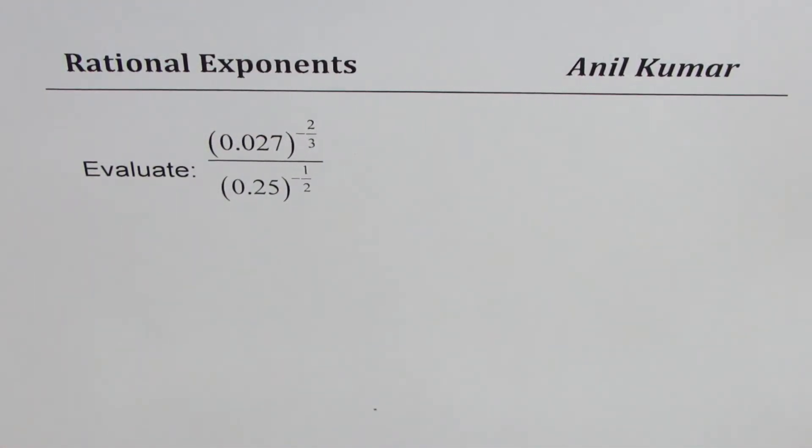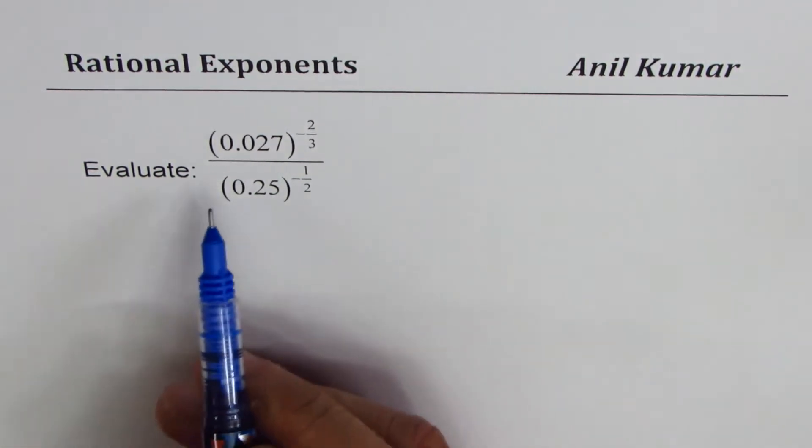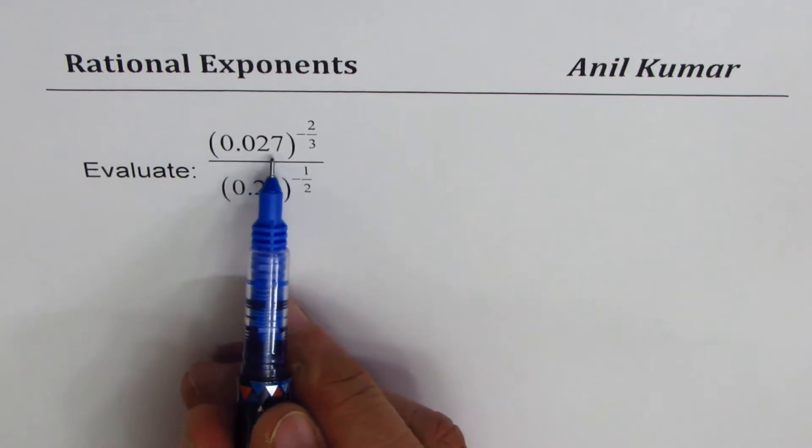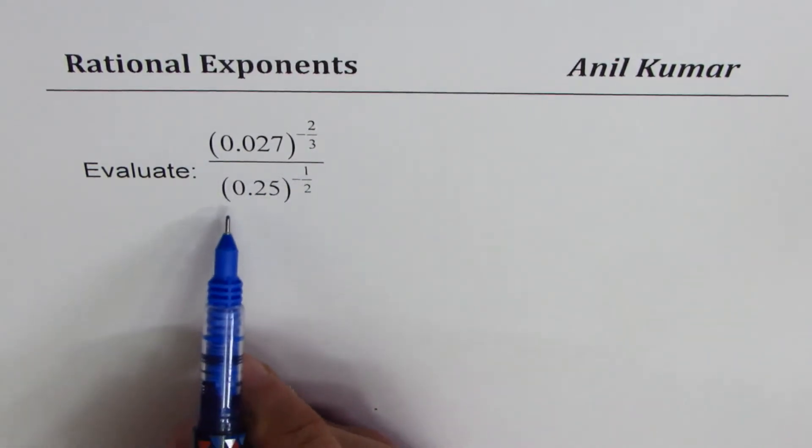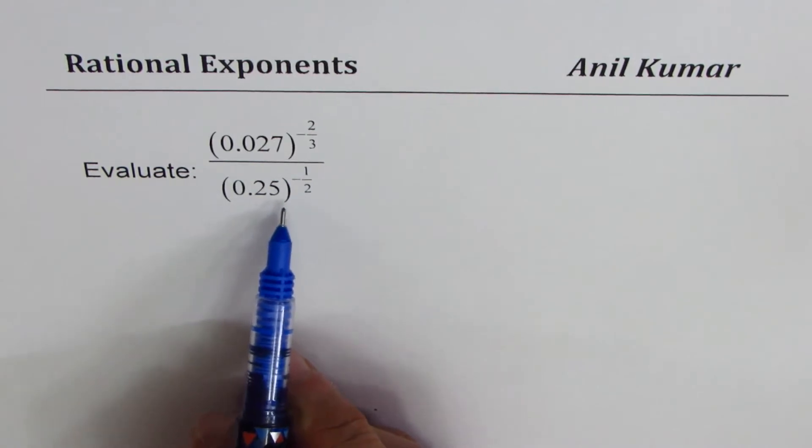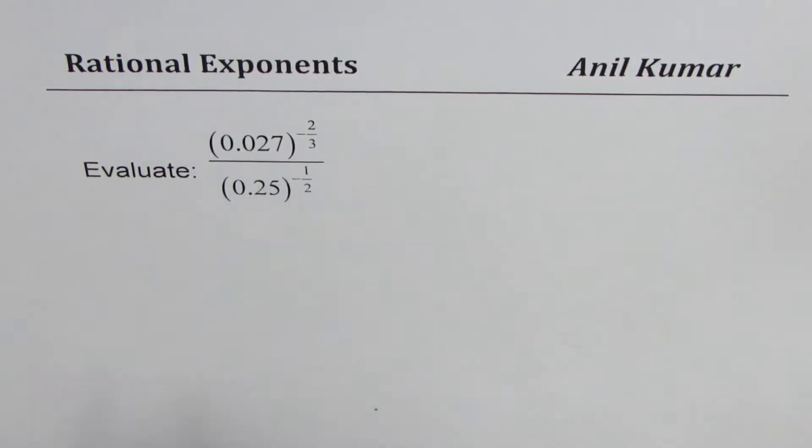I'm Anil Kumar and this video will explore rational exponents for decimal numbers. You need to evaluate (0.027) to the power of minus 2 over 3 divided by (0.25) to the power of minus half. You can always pause the video, answer the question, and then look into my suggestions.